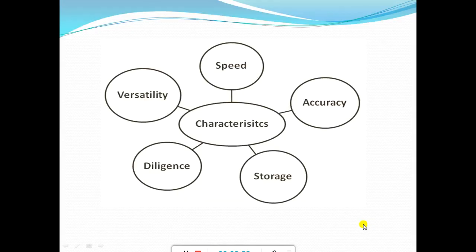The first topic of this chapter is the characteristics of computer. What are the characteristics that make the computer faster and superior than human beings? The first one is speed, second accuracy, third storage, fourth diligence, and fifth versatility. Let us see one by one.